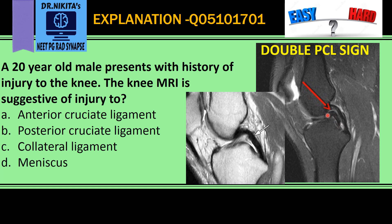This second PCL-like structure is actually the flipped fragment of the medial meniscus, which comes and sits here after there is a bucket handle tear of the meniscus. This torn fragment of the meniscus comes and sits anteriorly to the actual PCL, giving the double PCL sign of bucket handle tear of the meniscus.